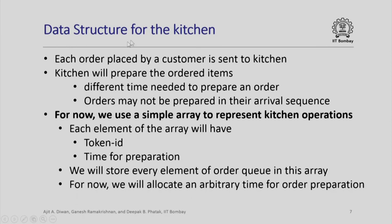The kitchen itself will have to store information about orders. We assume that each order placed by a customer is sent to the kitchen. The pertinent information is the token id and the time required for preparation of that order. We presume that the kitchen will prepare the ordered items. Different times will be needed to prepare an order and orders may not be prepared necessarily in the sequence of their arrival. For now, we use a simple array to represent kitchen operations. Each element of the array has a token id and time for preparation. We store every element of the order queue in this array as each order is placed.